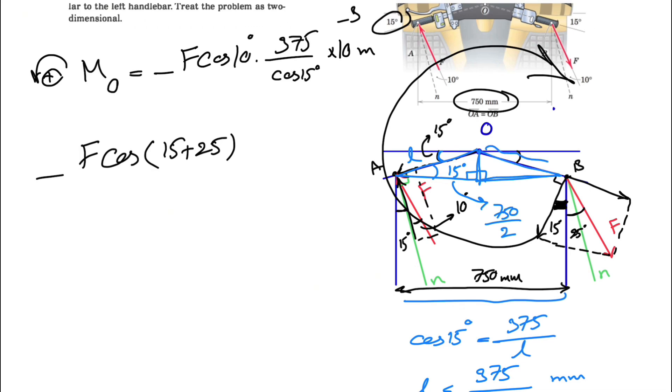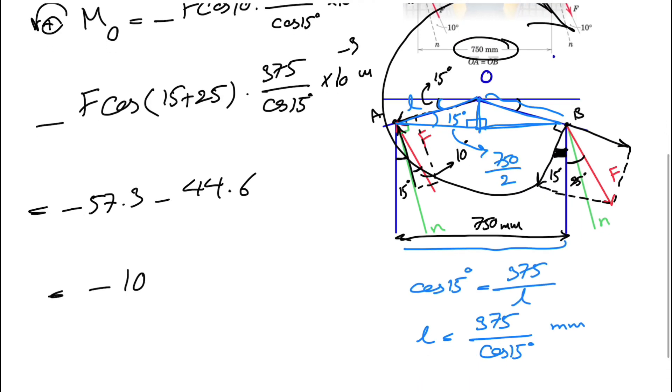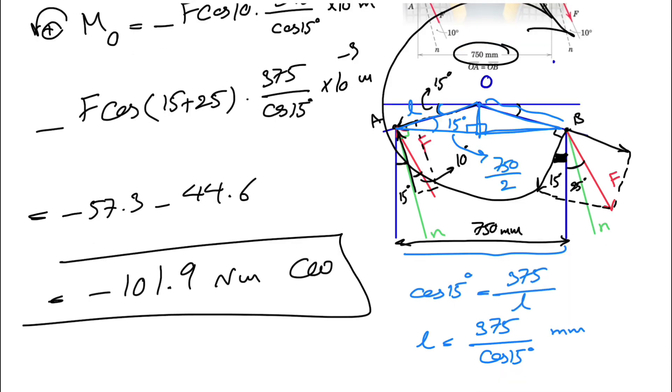We have the same right triangle here, and because of the symmetry of the shape, the hypotenuse would be the same: 375 over cosine of 15 times 10 to the minus 3 meters. If you calculate this, we get minus 57.3 minus 44.6, and this gives us minus 101.9 Newton meters. The negative sign shows that the moment is clockwise.